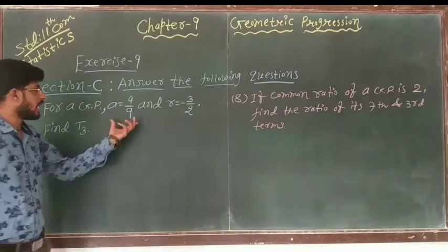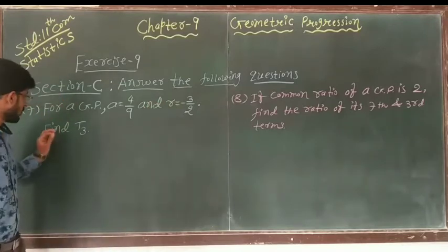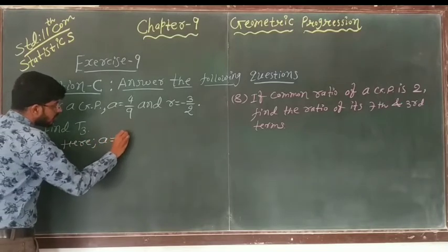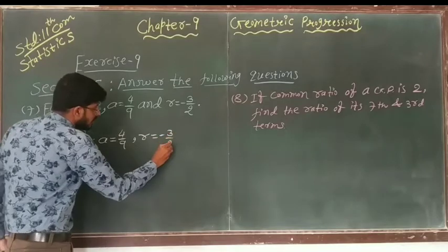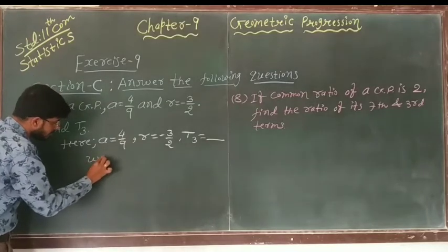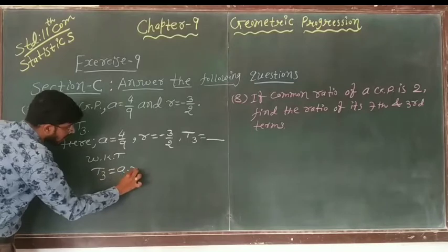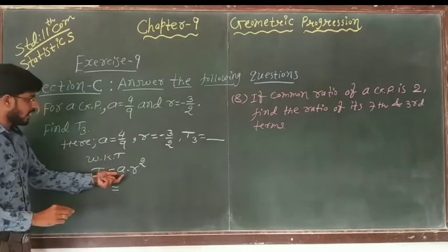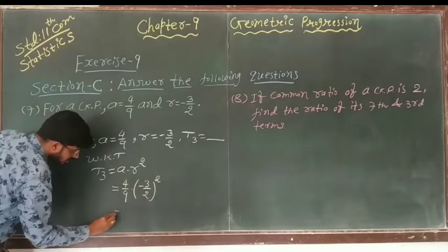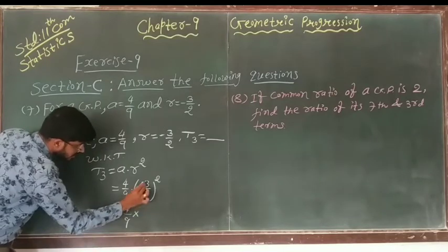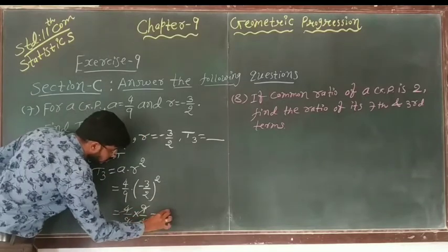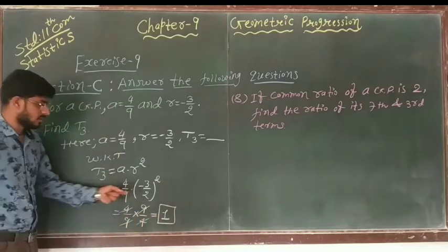Question number 7: For a GP with A equals 4/9 and R equals minus 3/2, find T3, the third term. We know T3 equals A into R squared. Substituting: T3 equals (4/9) into (minus 3/2) squared. This gives (4/9) into (9/4), and since the negatives square to positive, T3 equals 1.